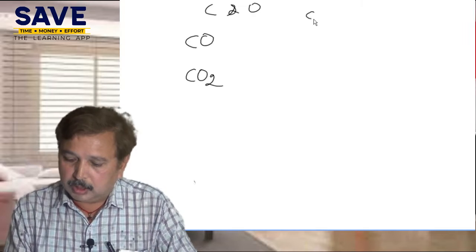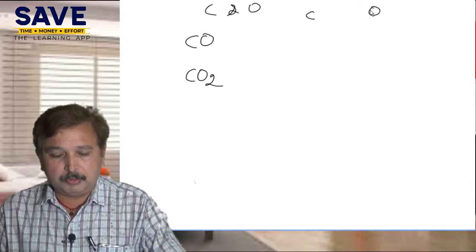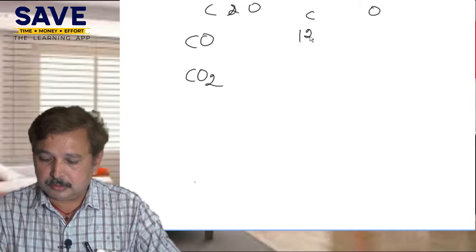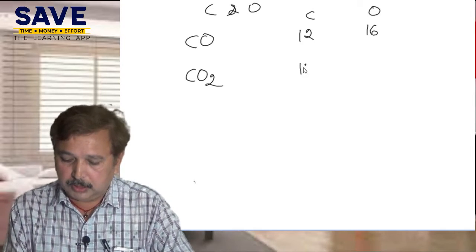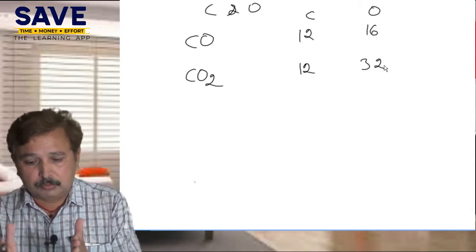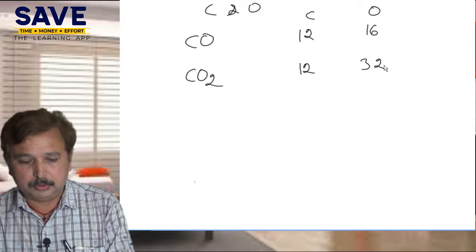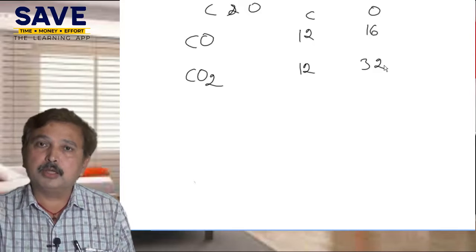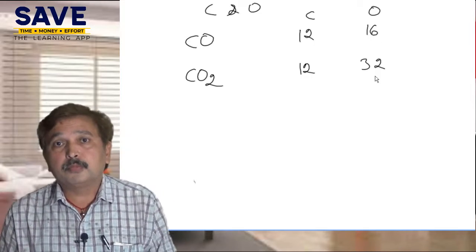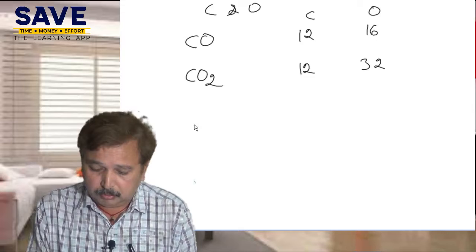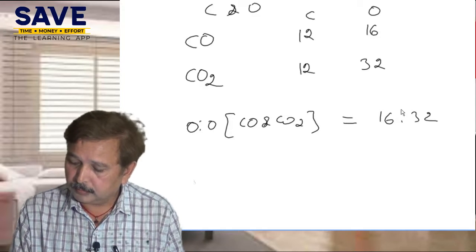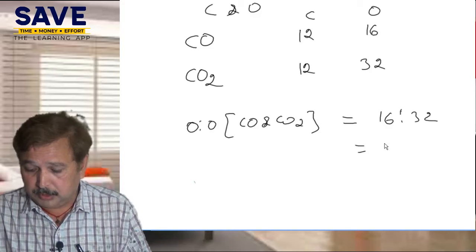What is the ratio between carbon and oxygen atoms in these molecules? In carbon monoxide (CO), the atomic mass of carbon is 12 and oxygen is 16. In carbon dioxide (CO2), carbon is 12 and there are two oxygen atoms, so oxygen is 32. If we fix the mass of carbon at 12, the ratio of oxygen in CO to oxygen in CO2 is 16 is to 32, which simplifies to 1 is to 2. This is our Law of Multiple Proportion.